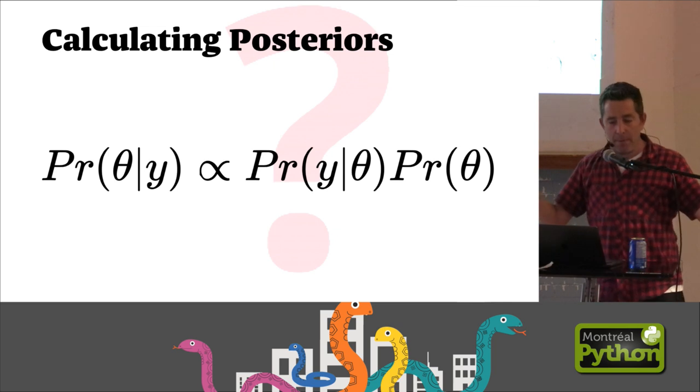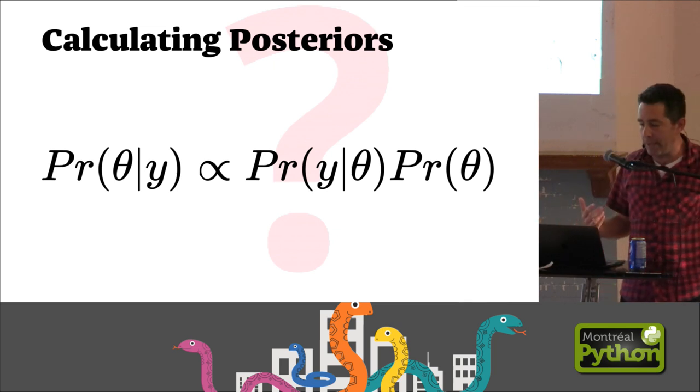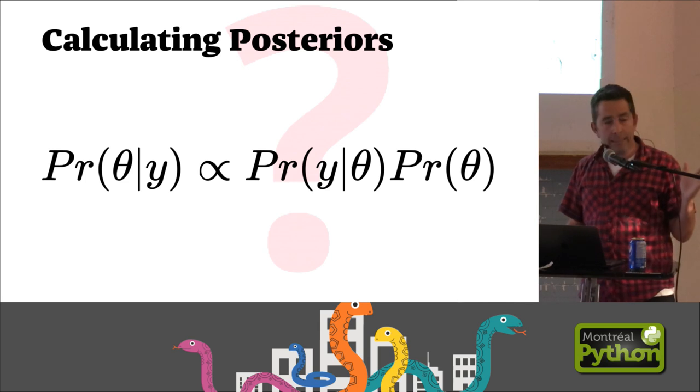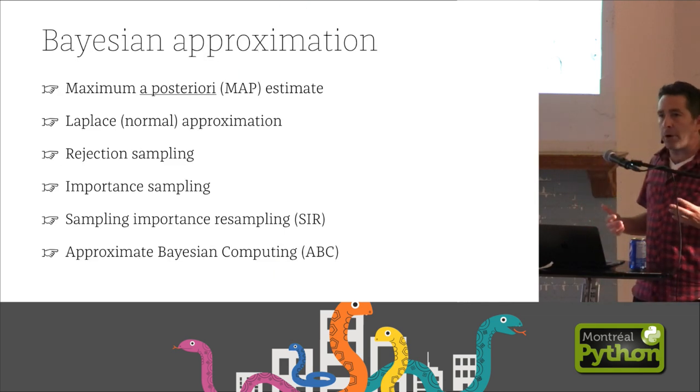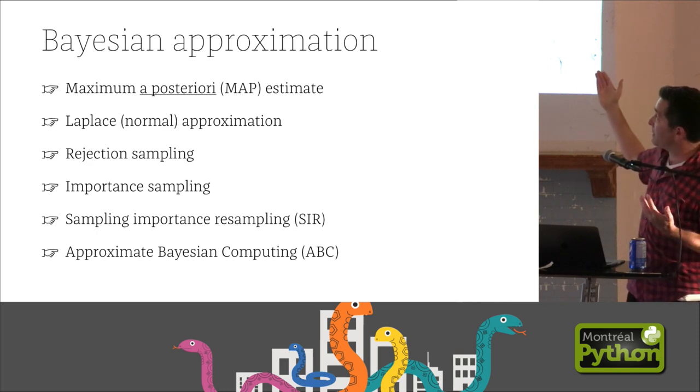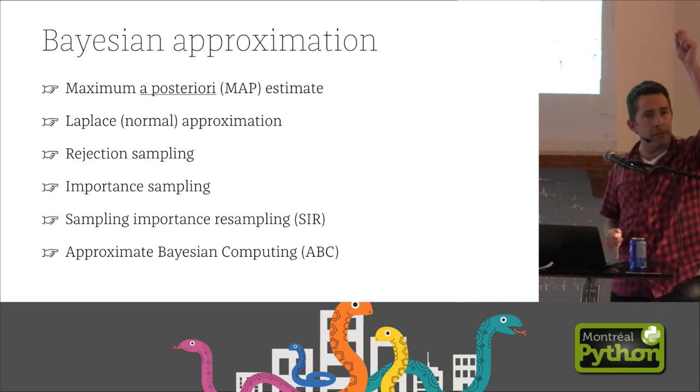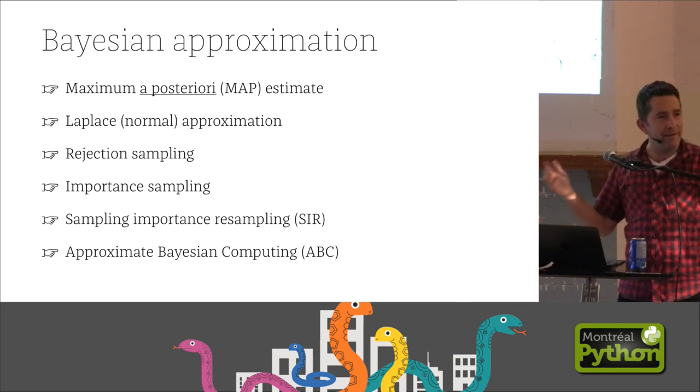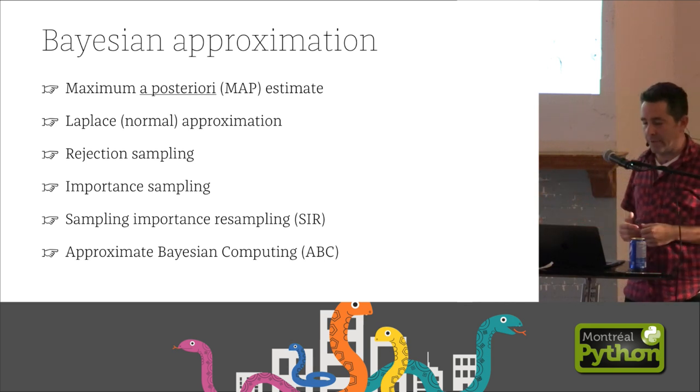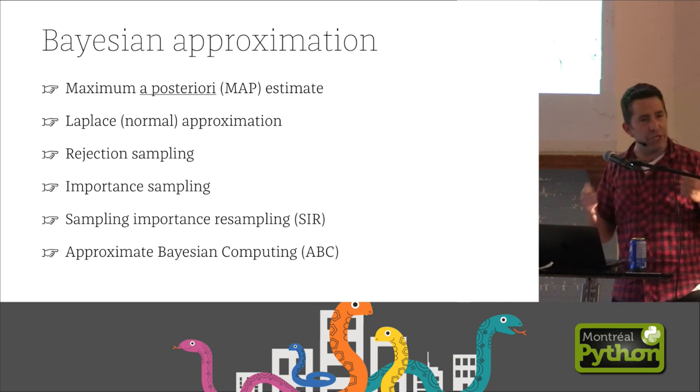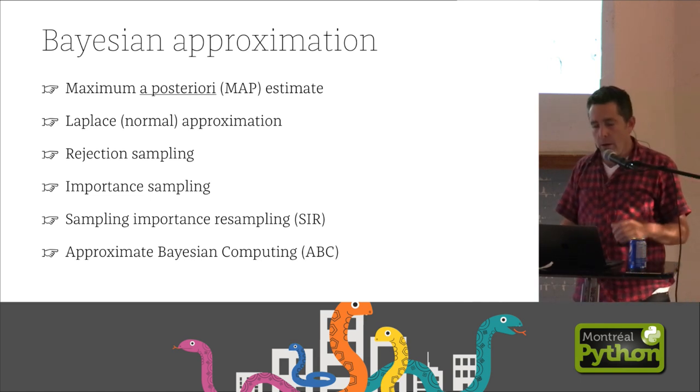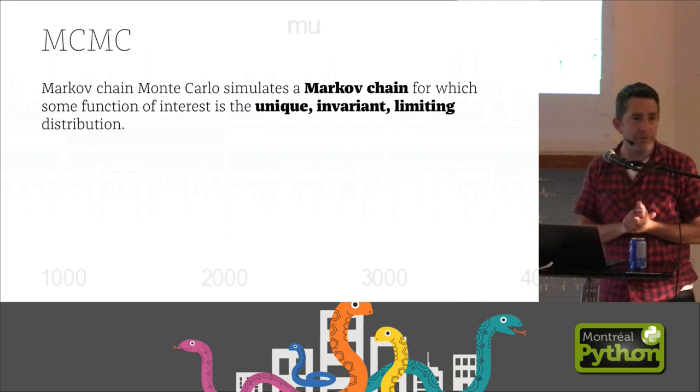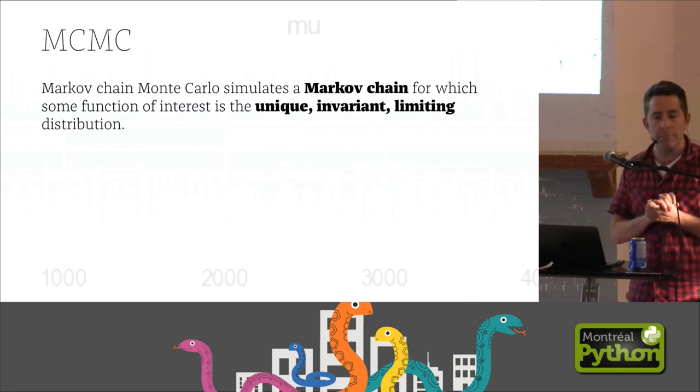So the next step is how do you get posterior distributions? This is the obstacle. This was the hard bit. It's analytically impossible most of the time. And even calculating them numerically is challenging. And so over the years, statisticians have come up with different approximations. Things called the map estimate, which really just does optimization and finds the peak. But you don't get anything. It's not really fully Bayesian because you don't get any distributions. You just get a value. You can do weird things like rejection sampling. Whole slew of things. The de facto standard for doing this is something called Markov chain Monte Carlo, or MCMC.